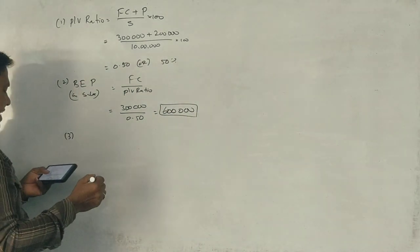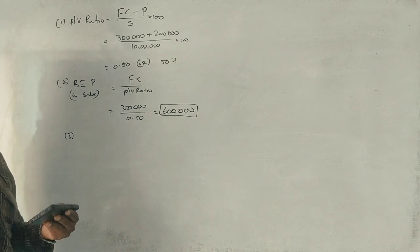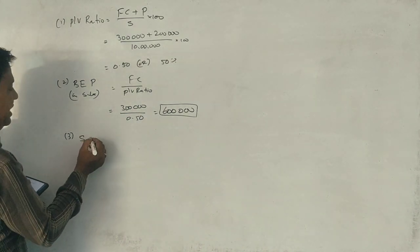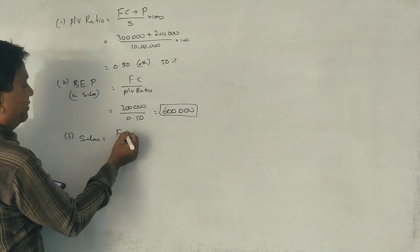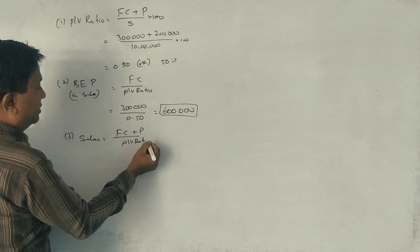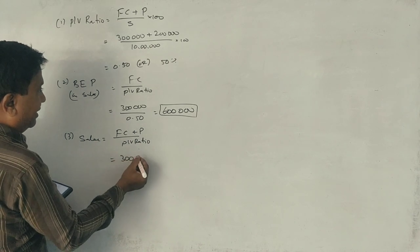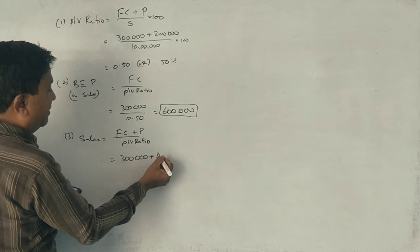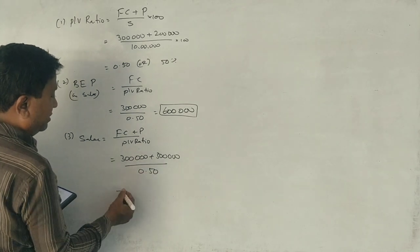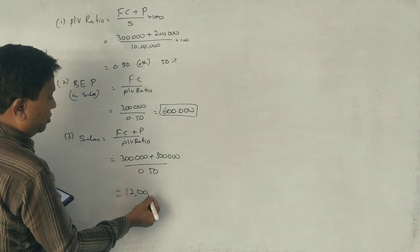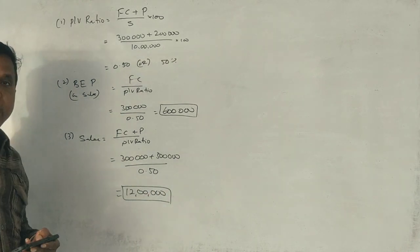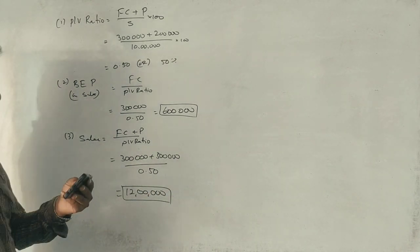Sales required to earn a profit of 3 lakhs. Sales is equal to fixed cost plus profit divided by P/V ratio. 3 lakhs plus 3 lakhs. Profit 3 lakhs. This is 0.5. We start with 12 lakhs.